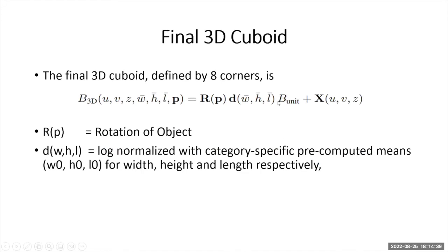As we've seen in the before slides, we have found d of w, h, l and x of u, v, z. By incorporating this in the final equation, we can see how the cuboid is generated for the detected 2D objects. Rp is the rotation of the object.